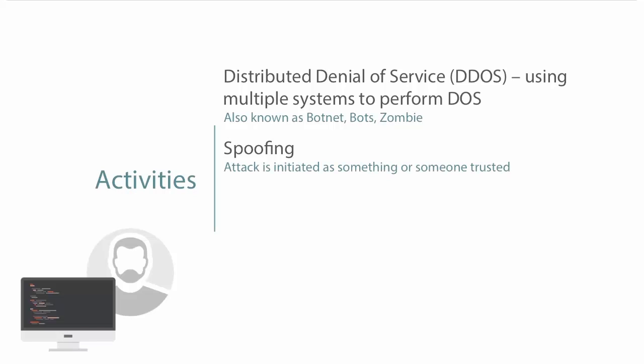Spoofing is an attack that pretends to be somebody or something else. MAC address spoofing, covered in a previous course, makes your MAC address look like another's to become trusted on a Wi-Fi network. Spoofing can also be done with email — if an attacker can read your address book, they can spoof your email address and send messages to your contacts with some kind of malicious payload.